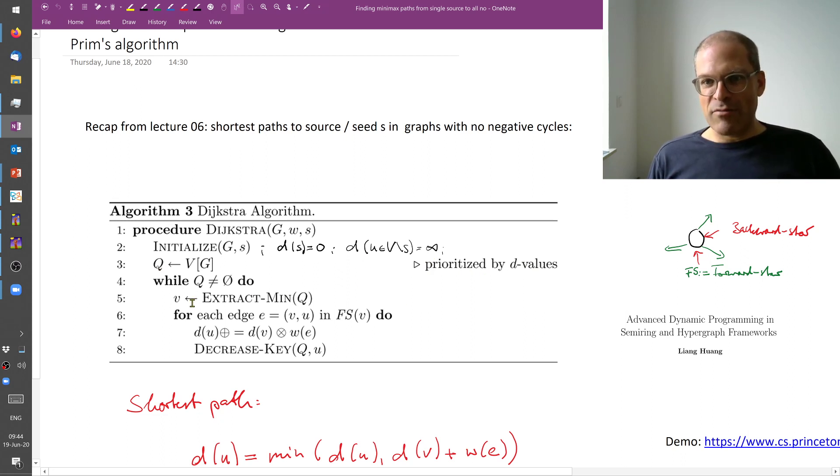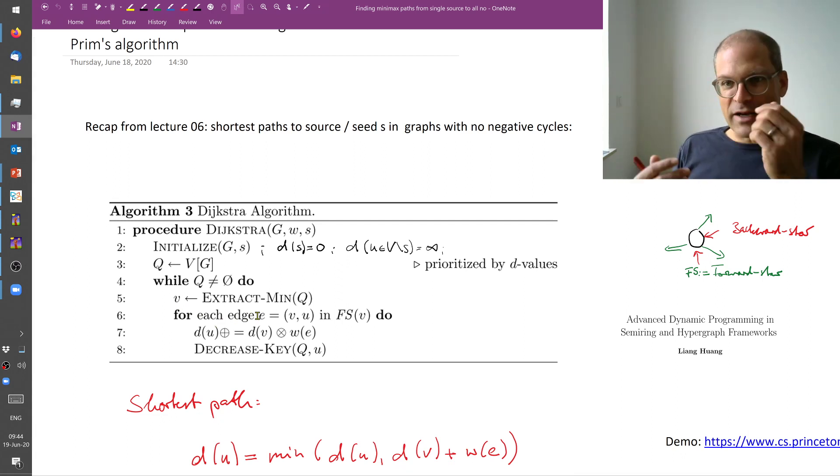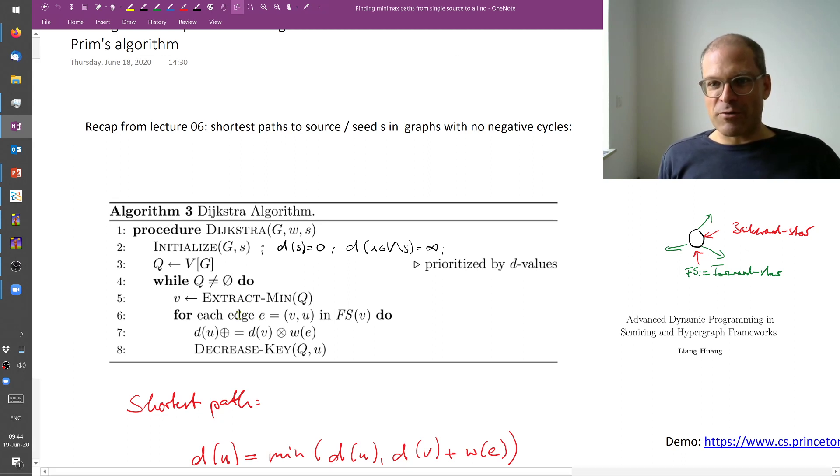Then we pop a node with the smallest distance extracted from the queue and so we have something that grows from the source and by extracting it from the queue we say that this has now been added to our partial graph, to our growing graph.